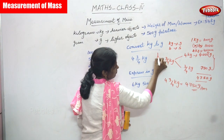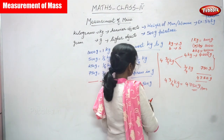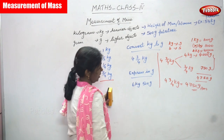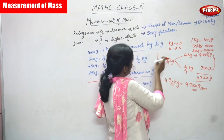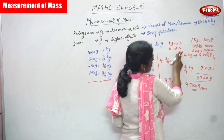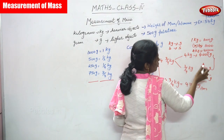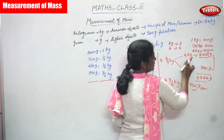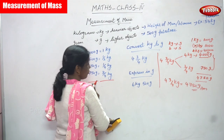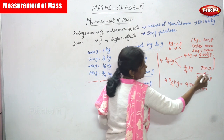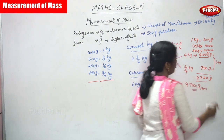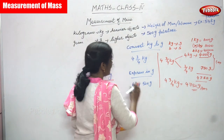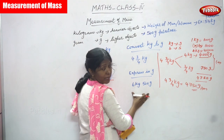To recap: converting 4¾ kilograms to grams — kilogram to gram is bigger to smaller, so multiply by 1000. One kilogram equals 1000 grams, so 4 kilograms equals 4000 grams. Segregate 4¾ kg into 4 kg and ¾ kg: 4 kg = 4000 grams, ¾ kg = 750 grams. Add both together: 4750 grams is the right answer.